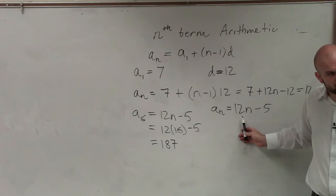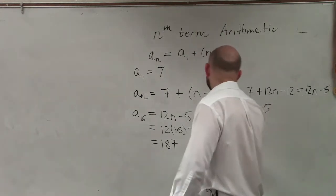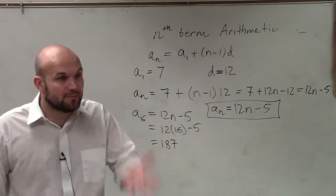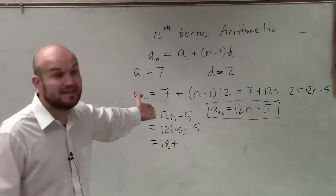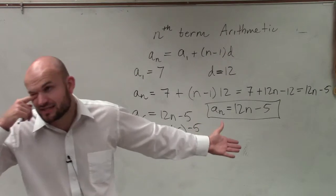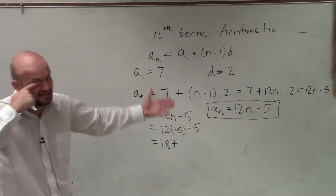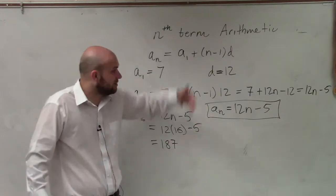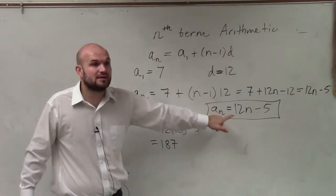This is your simplified rule. So when I'm asking you to identify a sub n, that's what I'm going to want you to do is have it simplified into that format. Because yes, then I can easily go ahead and find a sub 16, a sub 19, a sub 99. So what I'm asking you is to find the rule. Finding the rule would be the plug-in.